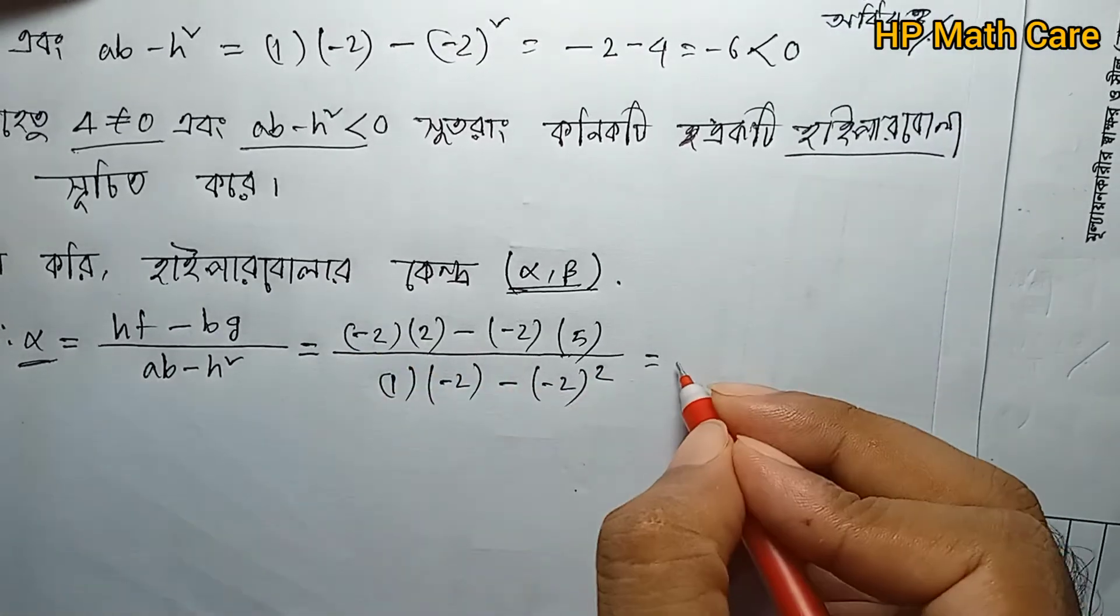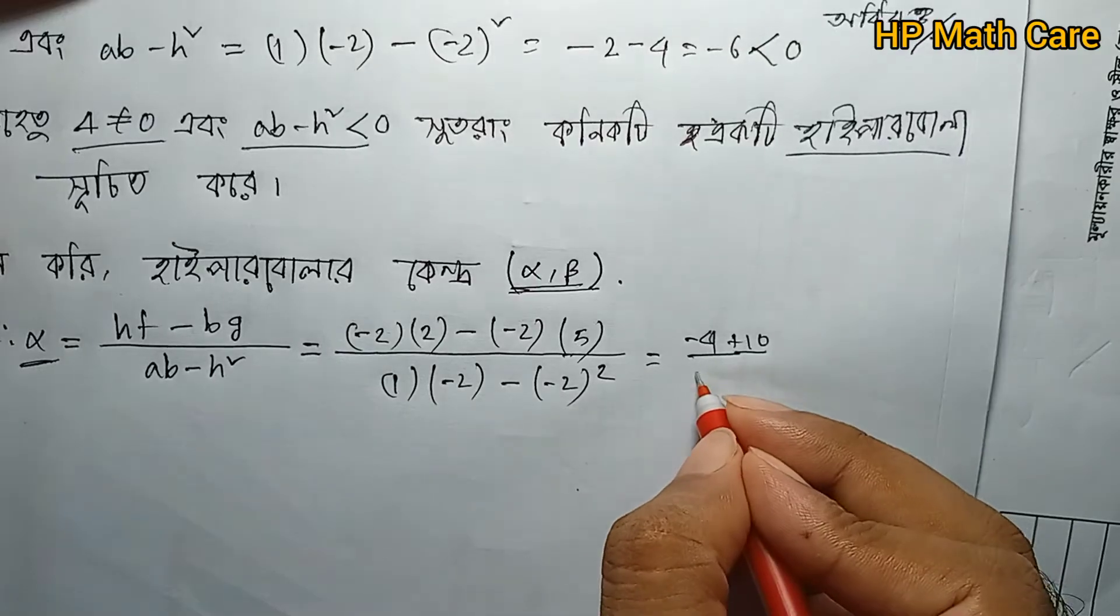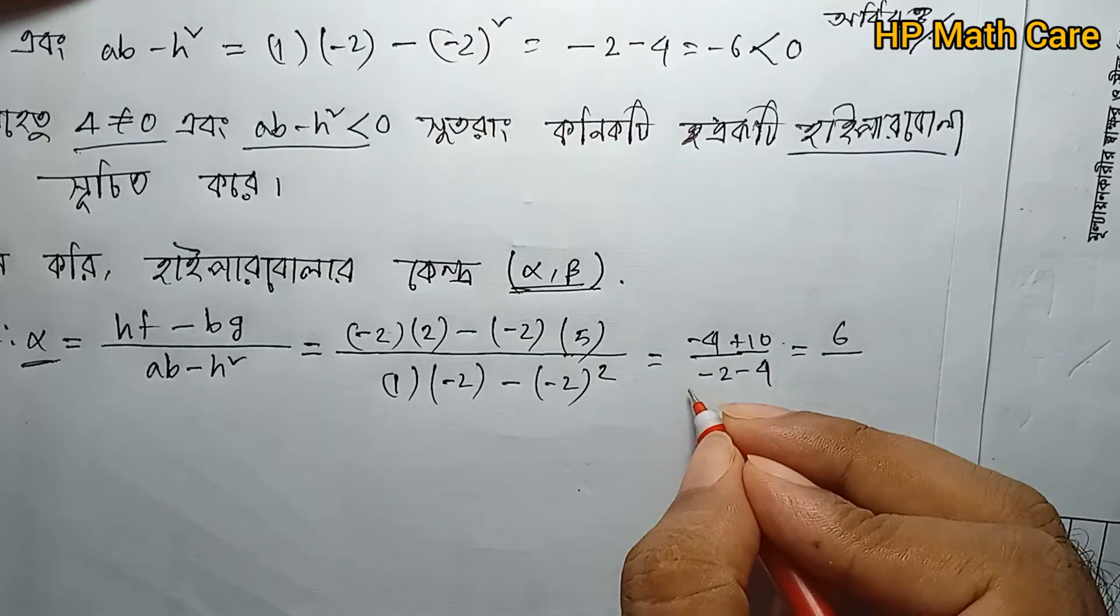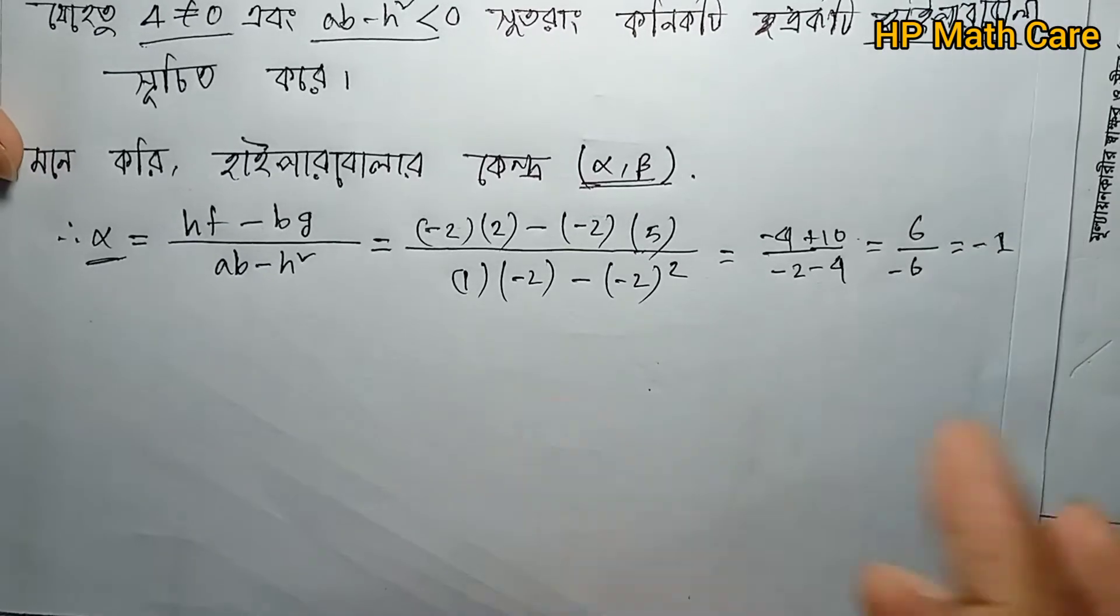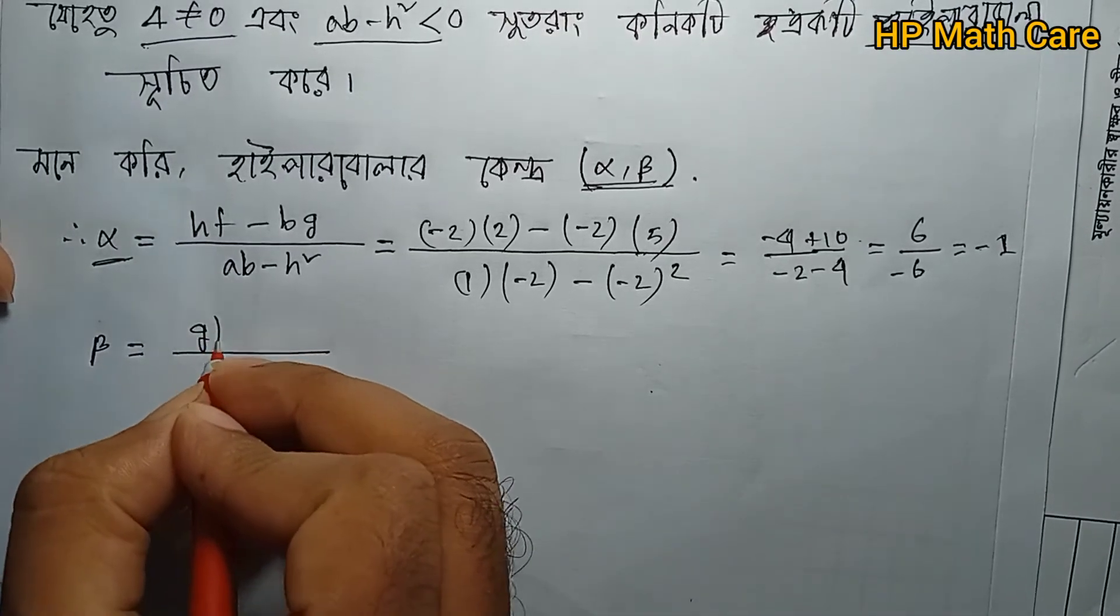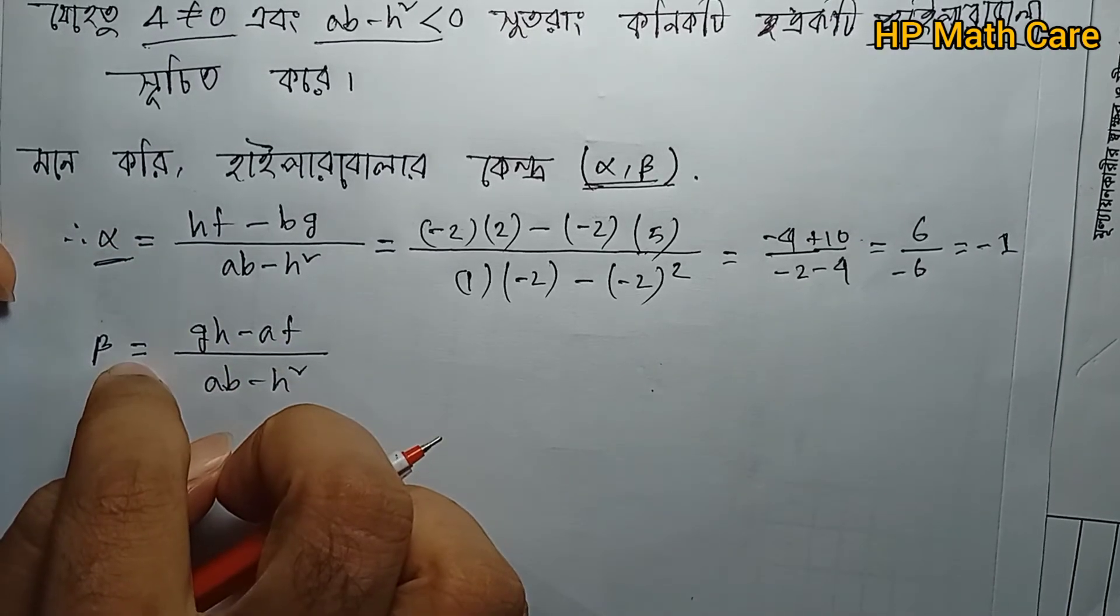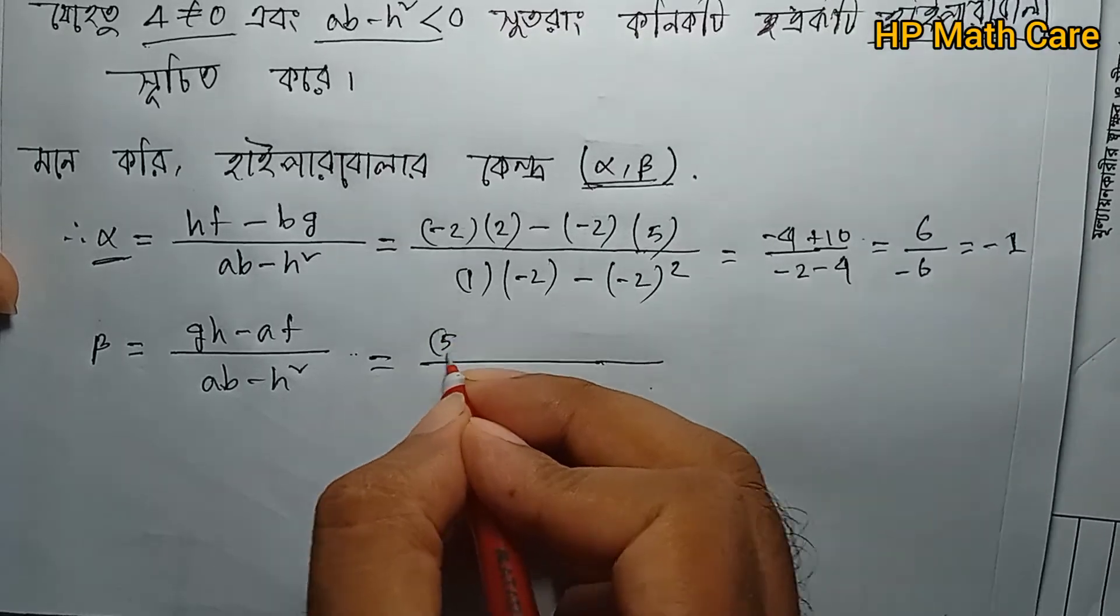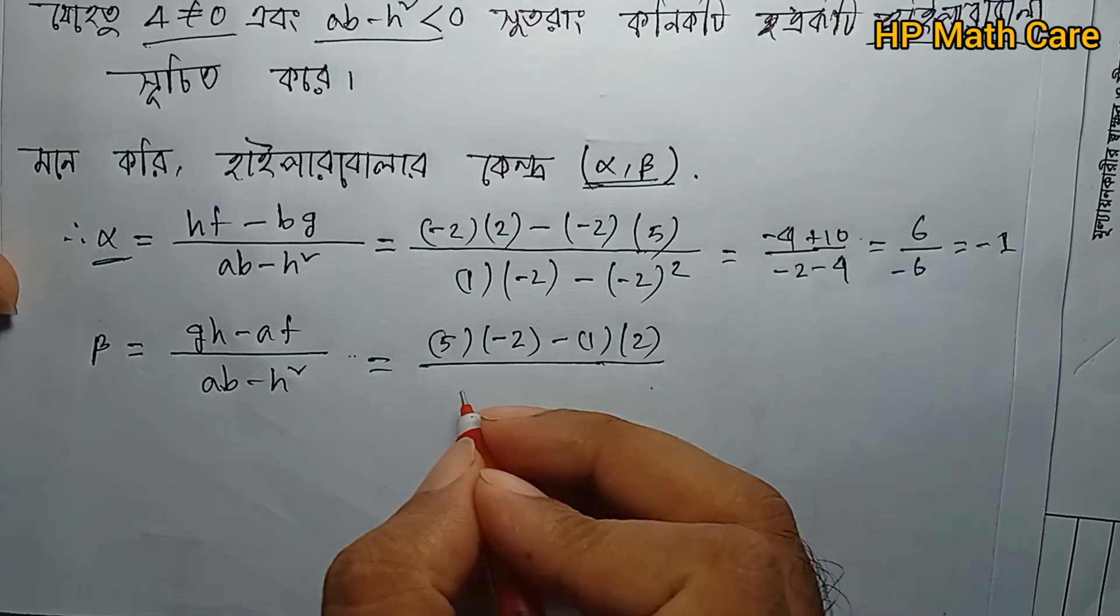This gives alpha = 6/(-6) = -1. Now for beta: beta = (gh - af)/(ab - h²). Substituting values: beta = ((5)(-2) - (1)(2))/((1)(-2) - (-2)²).